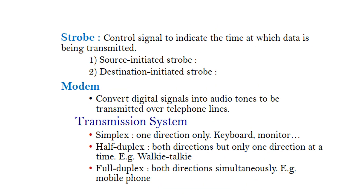Asynchronous Data Transfer — Strobe: A control signal used to indicate the time at which data is being transmitted. There are two types: (1) Source-Initiated Strobe, and (2) Destination-Initiated Strobe.